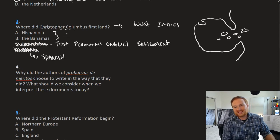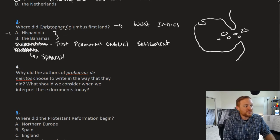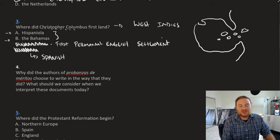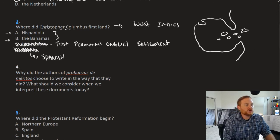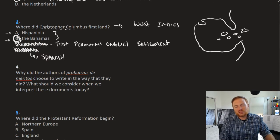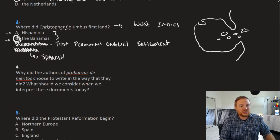That's where Columbus first landed. Both of these answer choices are in the West Indies. Columbus did go to both of them, the Bahamas and Hispaniola. The correct answer, though, is B, the Bahamas. It's a little bit tricky, but Bahamas is the correct answer.